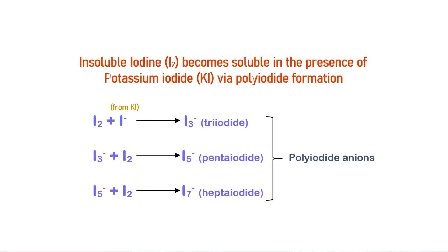Iodine on its own is insoluble in water. Addition of potassium iodide results in a reversible reaction of an iodide ion with iodine to form a tri-iodide ion, which further reacts with an iodine molecule to form a penta-iodide ion, and so on. Check out the short video on how to prepare iodine solution via the link on screen or in the description below.